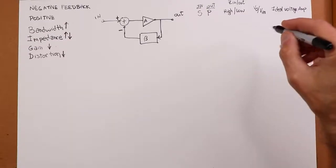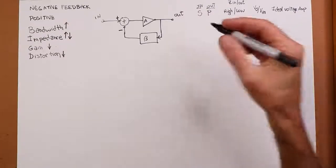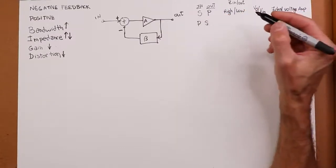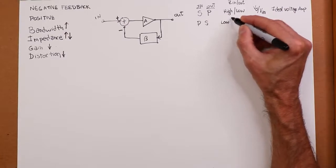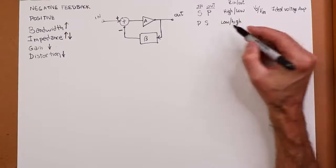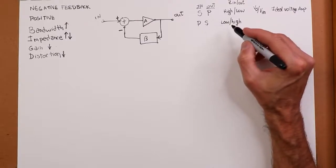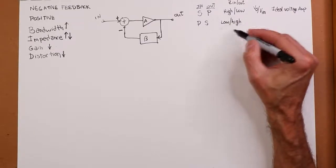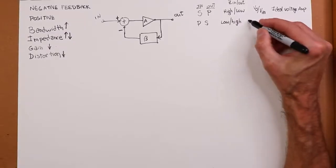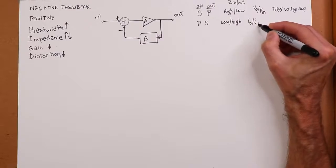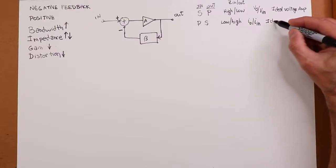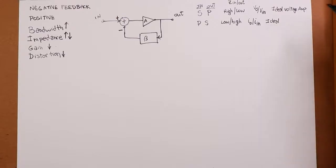In contrast, if we flip this to parallel-series rather than series-parallel, we have a low input impedance and a high output impedance. A low input impedance is associated with a current-sensing device, and a high internal impedance for a source leads to a current source. So that's I-out versus I-in — an ideal current amplifier with gain A sub I.